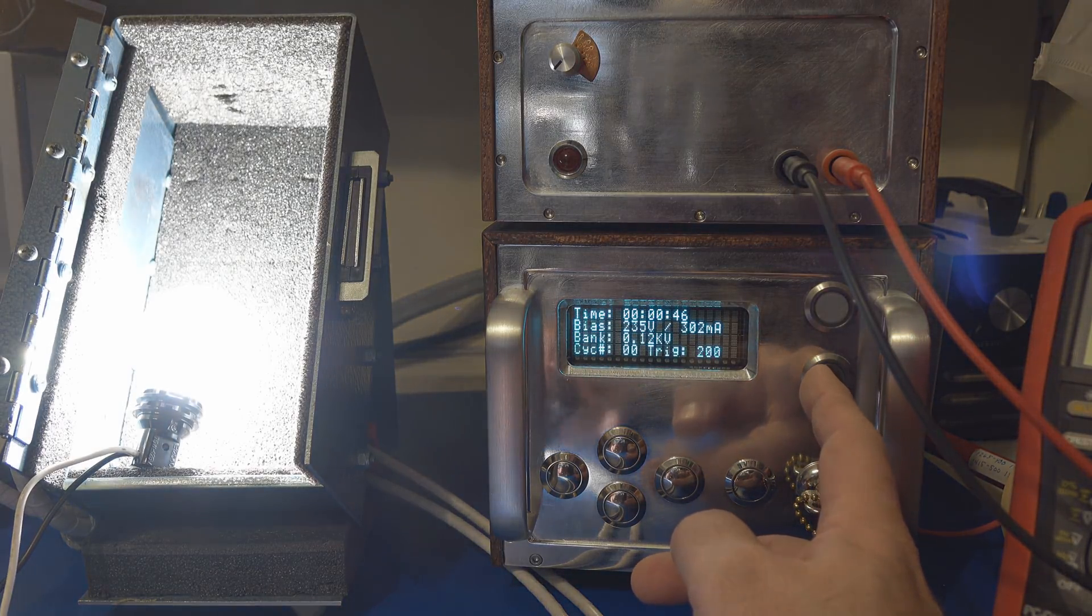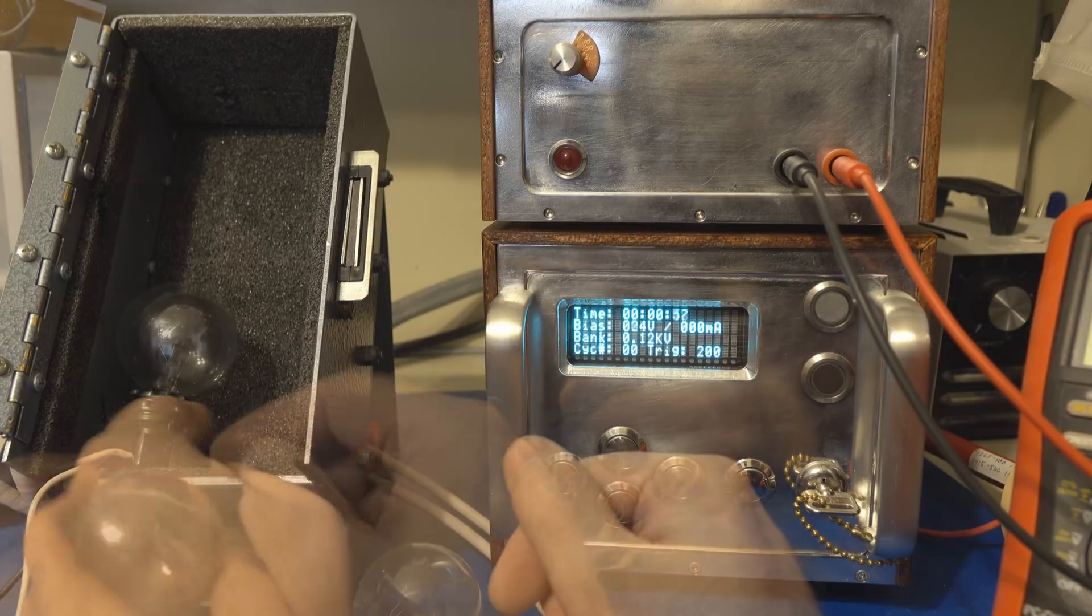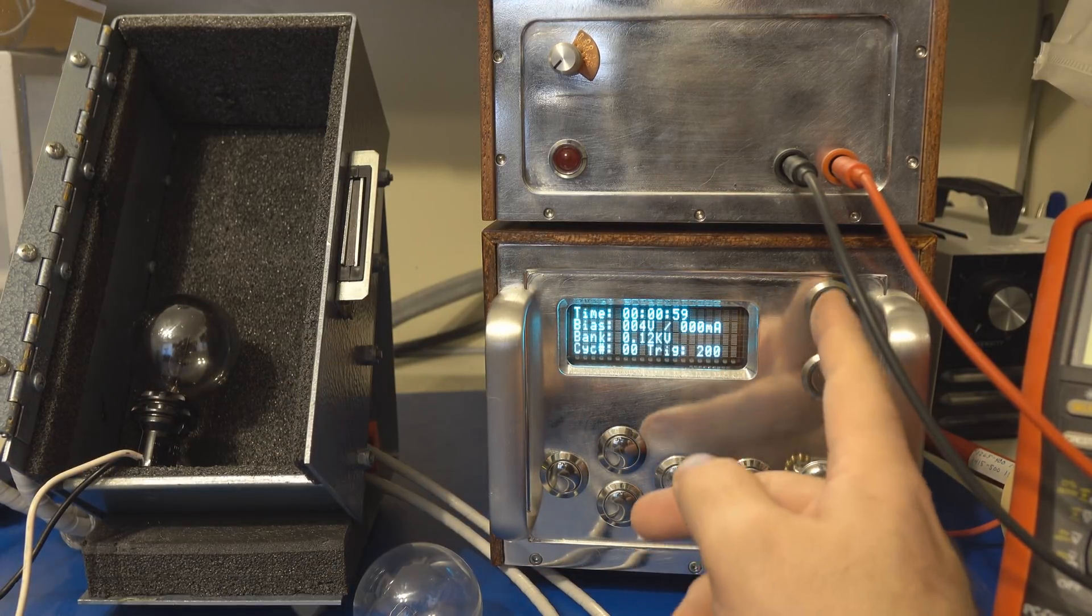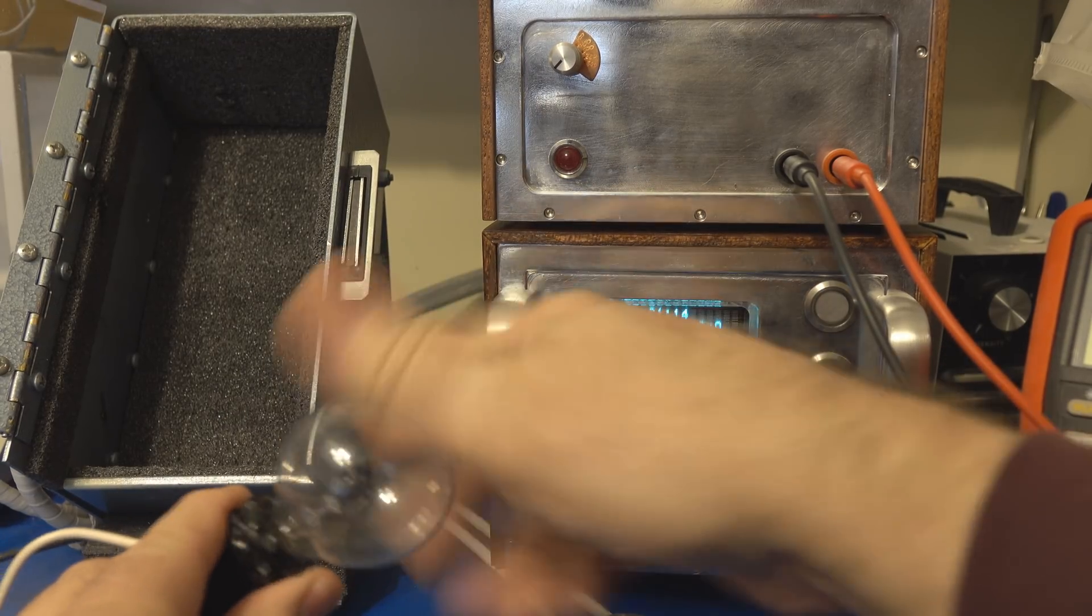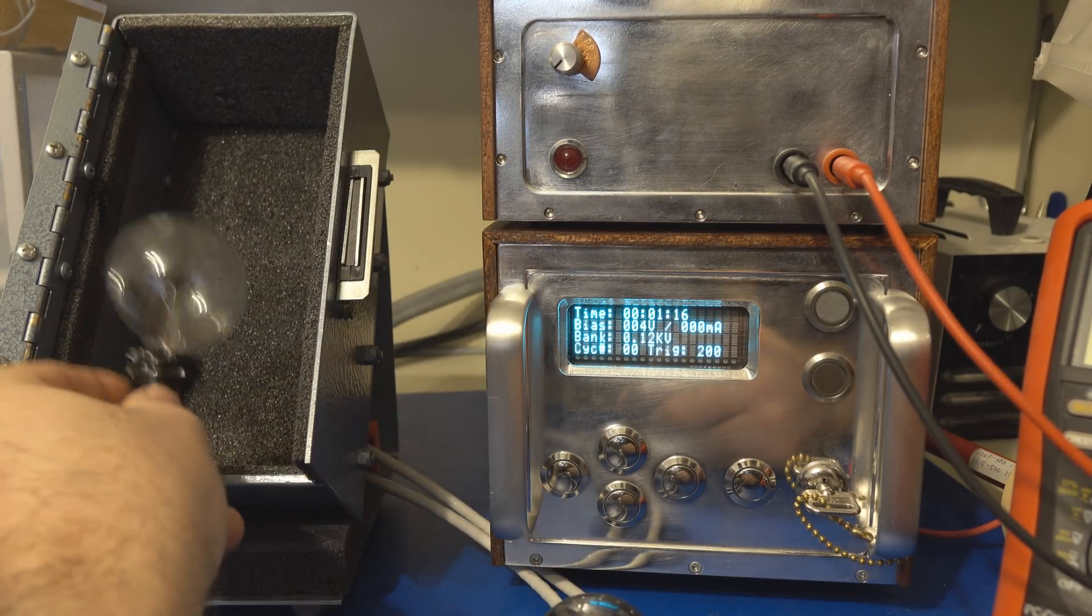You get an idea how bright that bulb is. Let's just try it with the other light bulb. This should be quite a bit dimmer and it is. So we're going to start our testing just using the clear filament bulb.